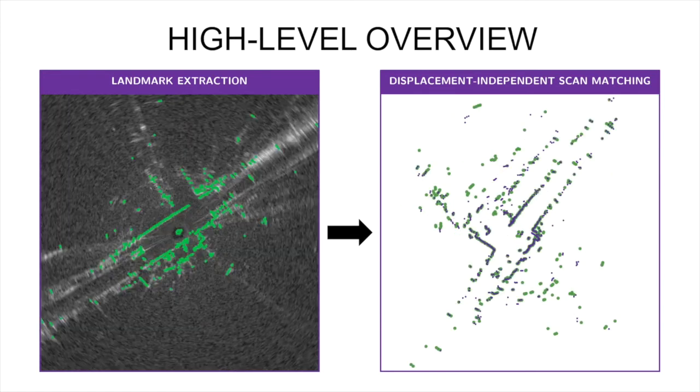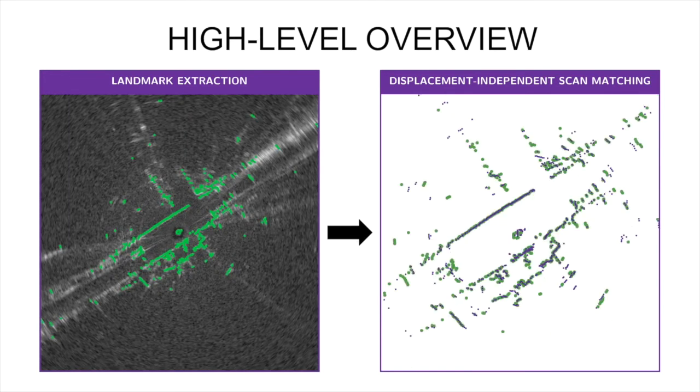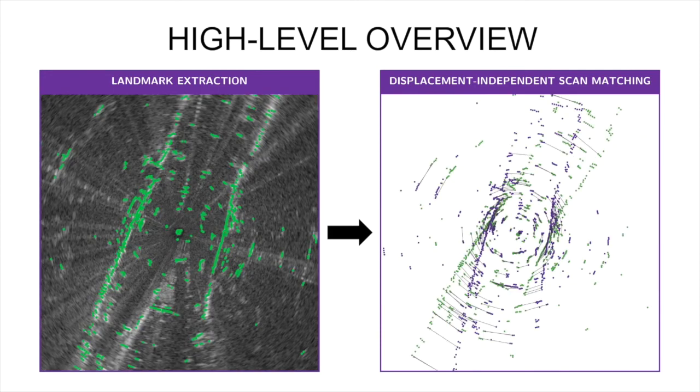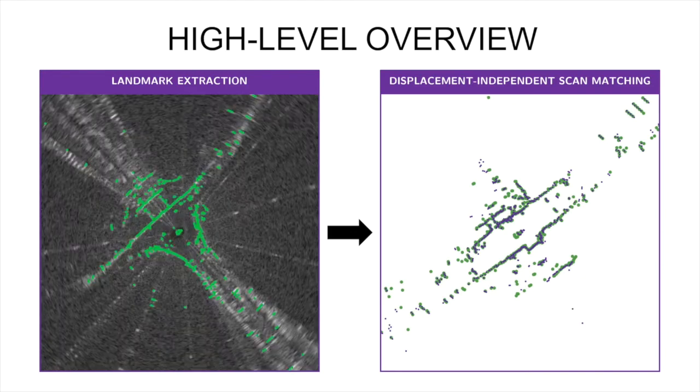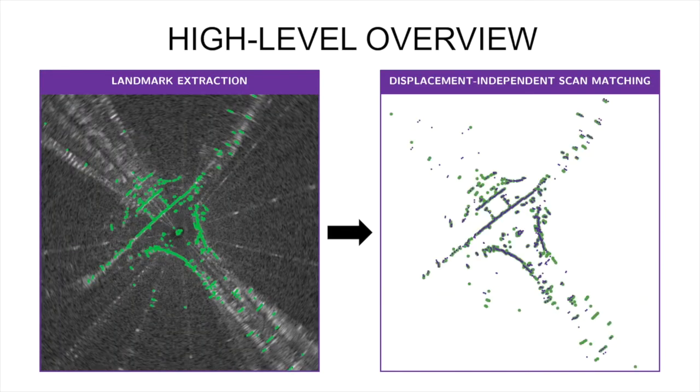The resulting point clouds, which can be separated by any displacement given sufficient scene overlap, are matched, then aligned, as shown on the right. The rigid body motion is estimated from this alignment.